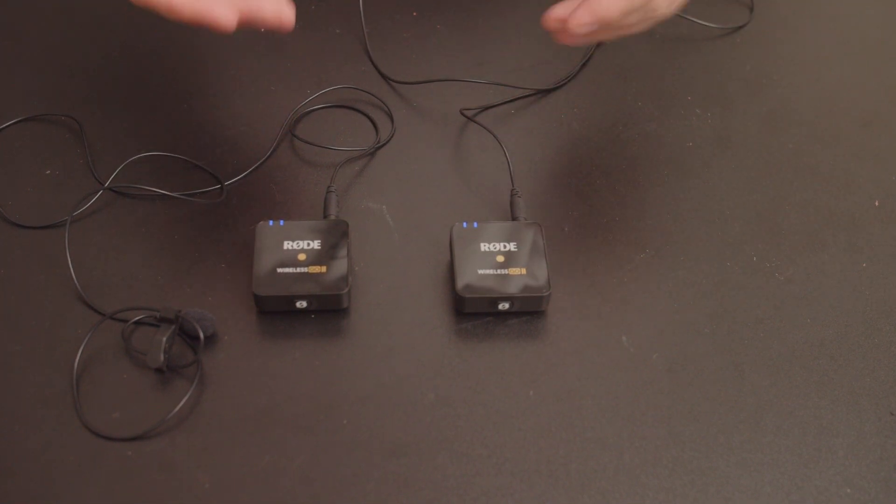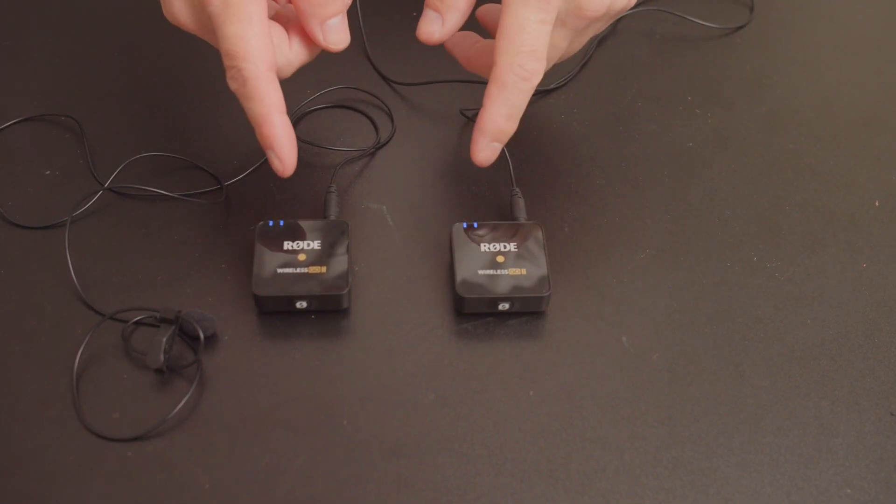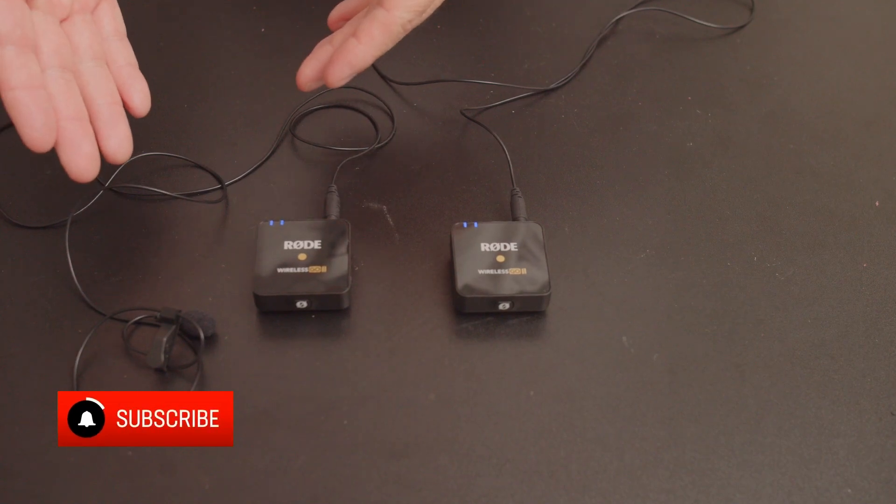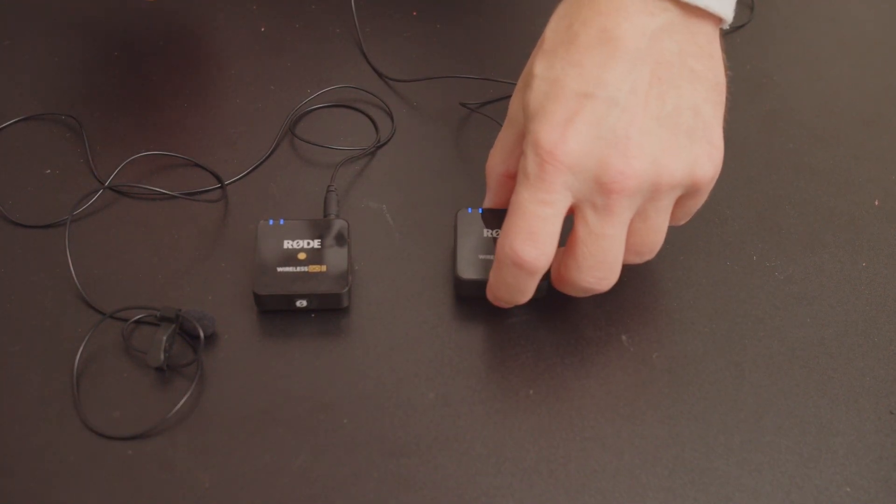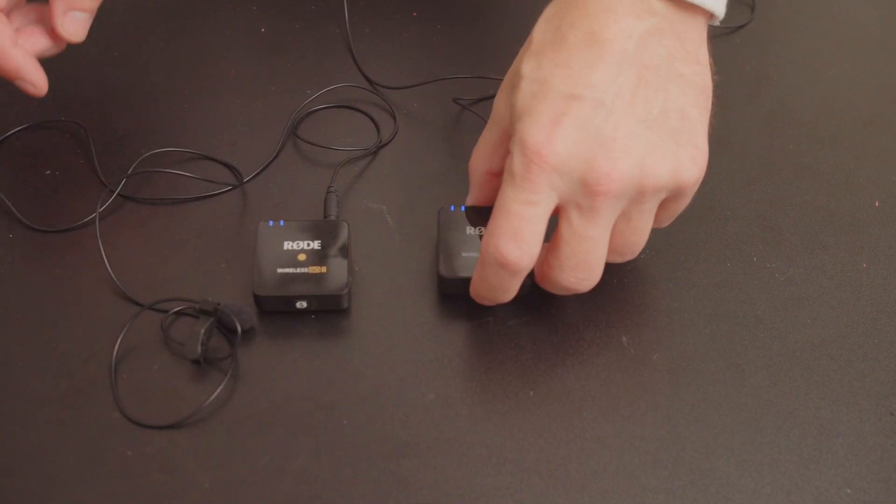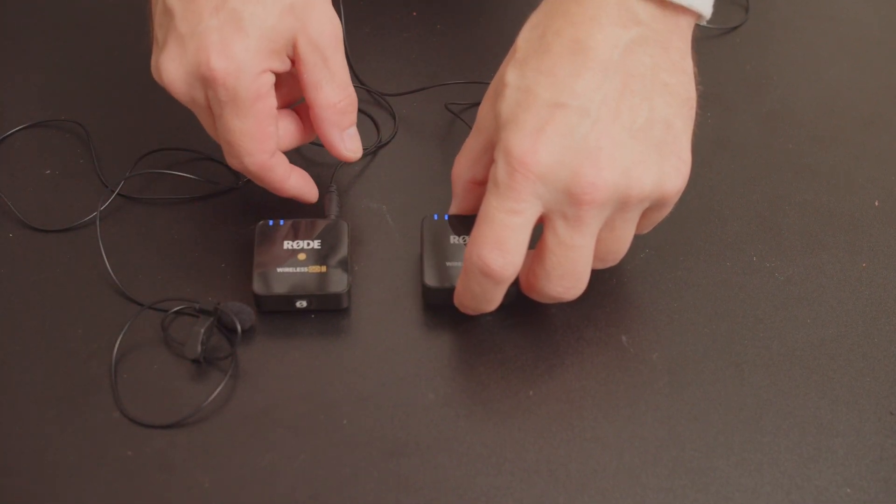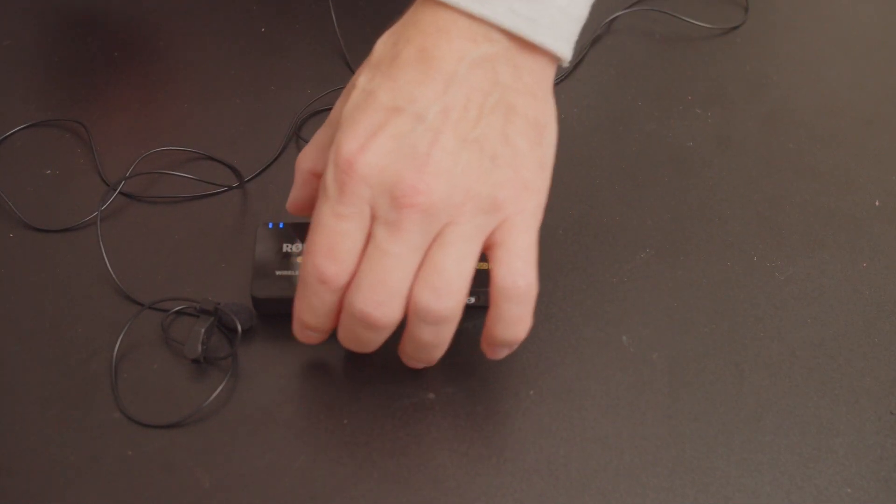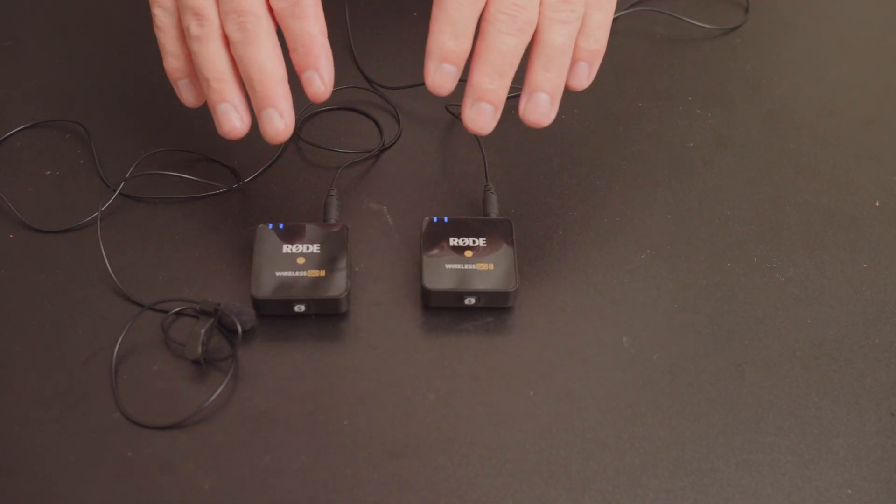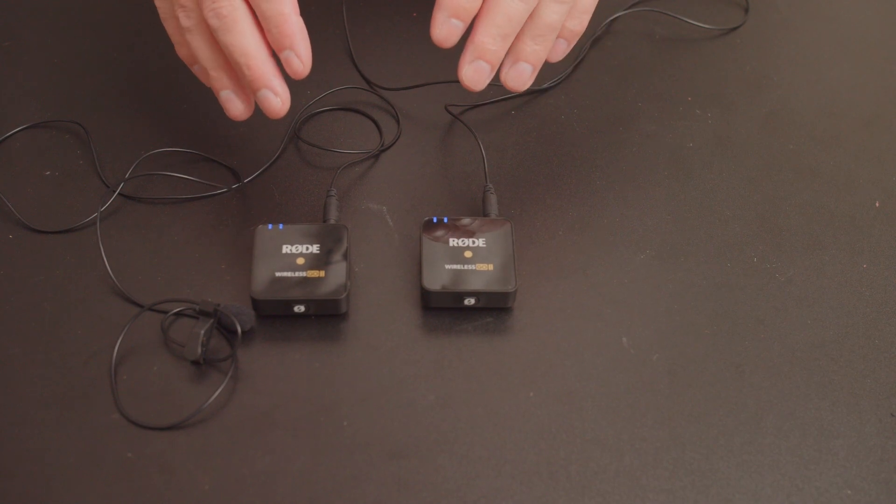If you have a Rode Wireless Go 2 microphone transmitter with a Rode Go lavalier plugged into it, then this noise may be familiar to you. Let me mute that. There is a design flaw with these and I'm going to show you how to get around it.